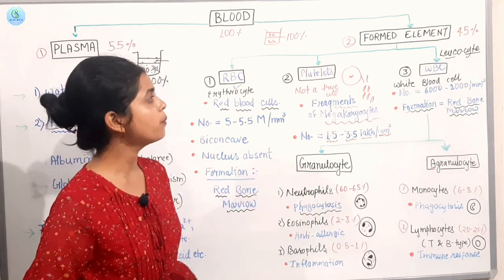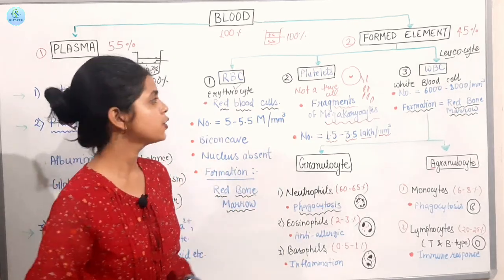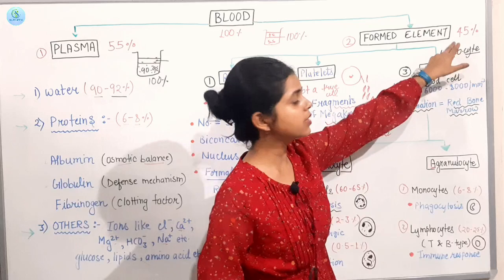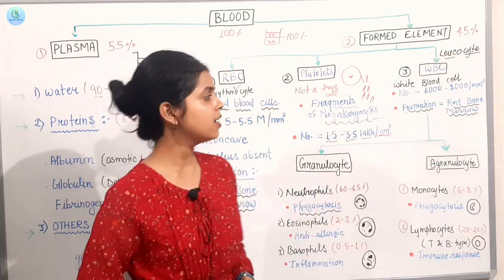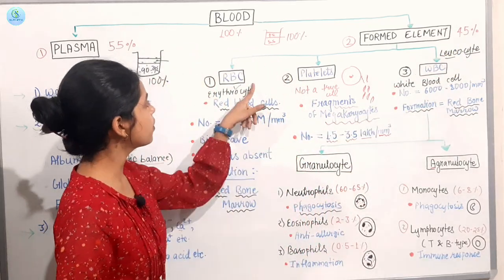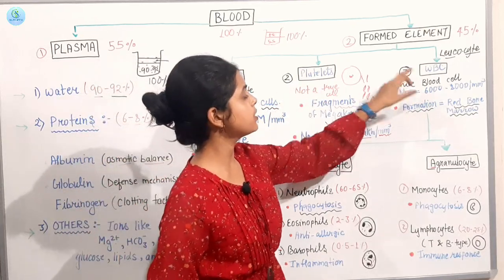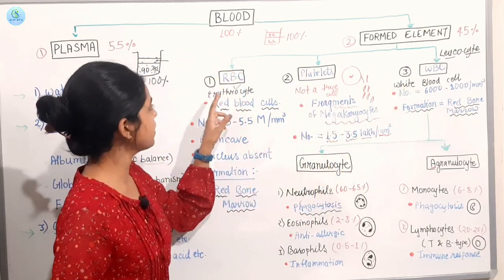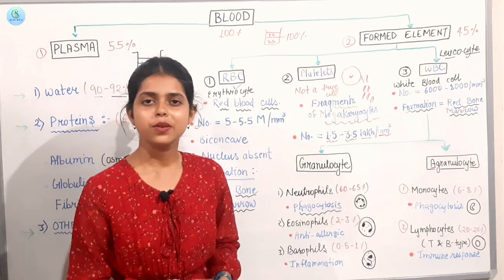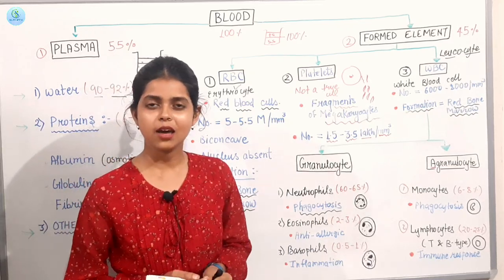Now let's see what are formed elements. The formed elements are 45%. You can see three parts. The first is RBC. The second is platelets. The third is WBC. Here, if we talk about RBC, we know the red blood cells.